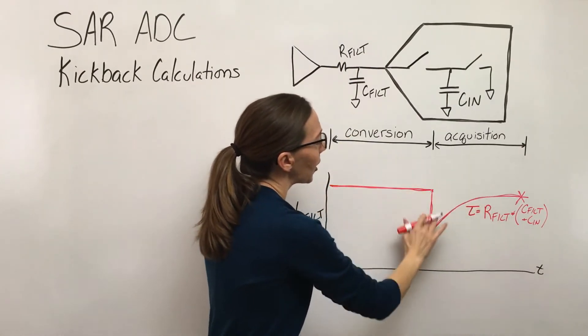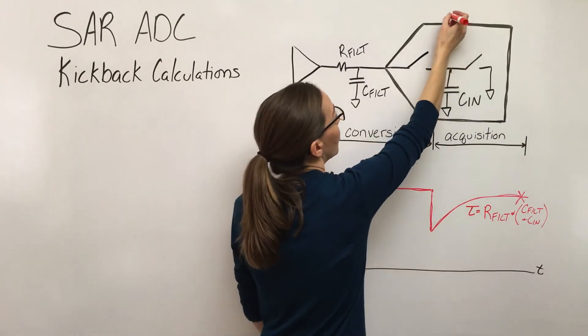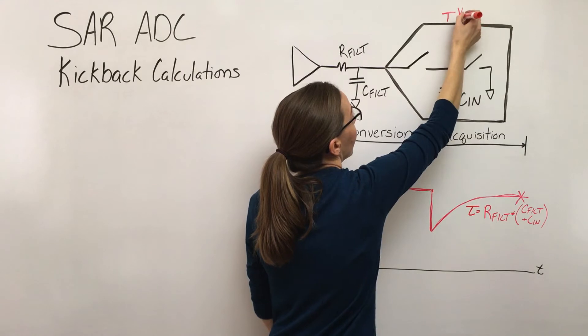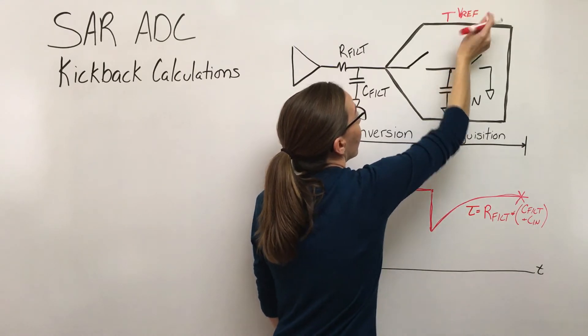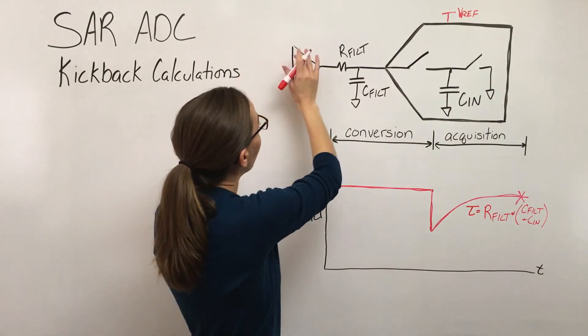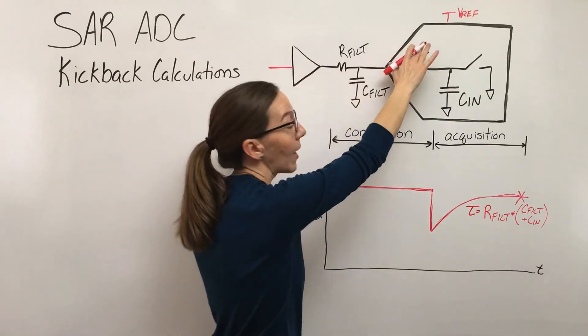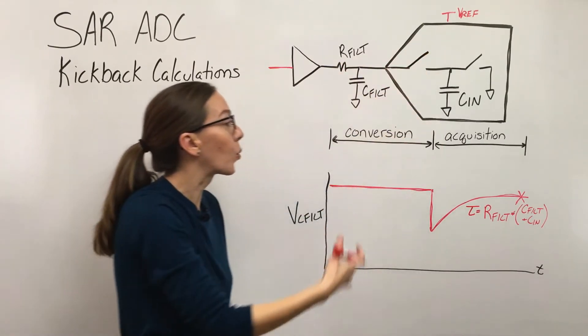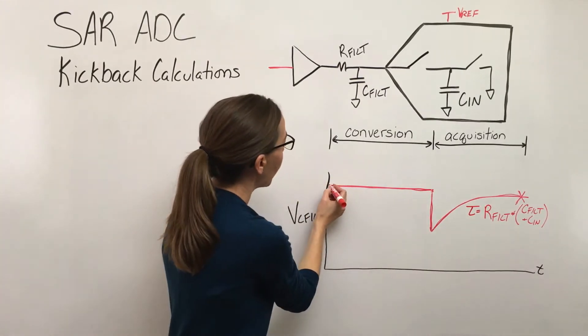To get a little firmer about what this curve is, let's make an assumption. We've got this reference voltage that we've set the ADC to, so let's assume that we're driving into this signal the full-scale reference. That gives us the worst case scenario for our settling - we're driving v-ref.